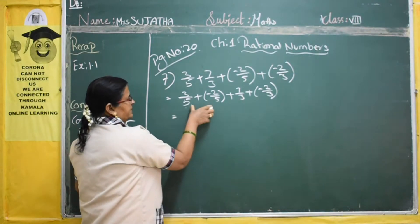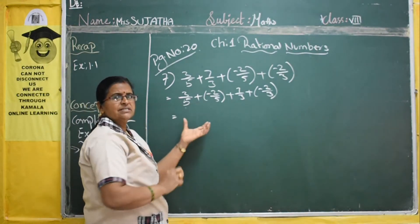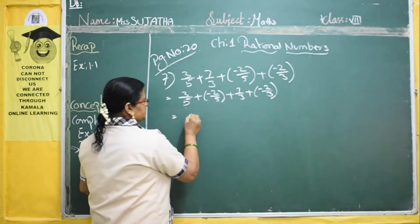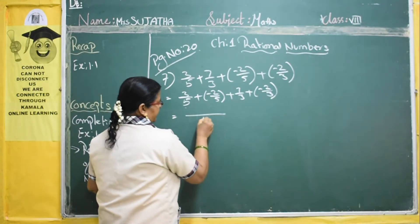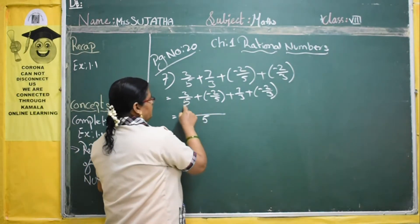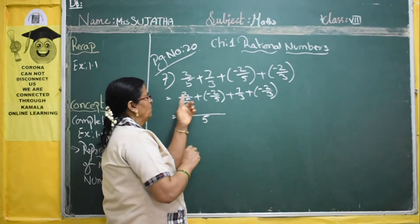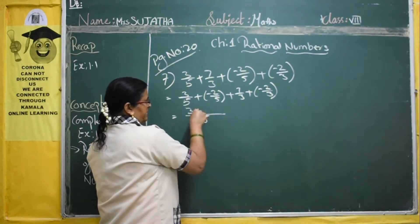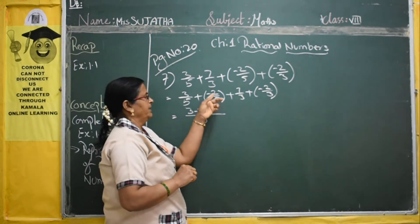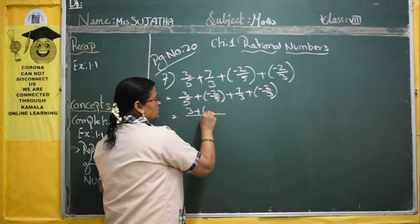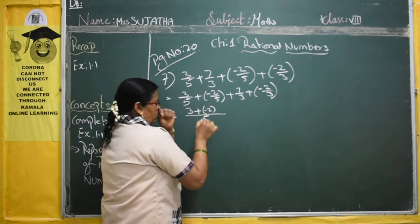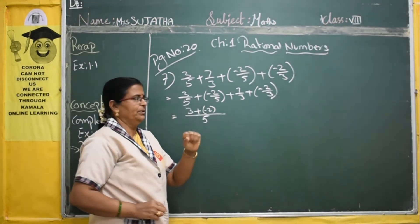For these two fractions, the denominator is 5. So take 5 as the LCM. 5 divided by 5 is 1. 1 into 3 is 3. Plus, 5 divided by 5 is 1. 1 into 2 — but here minus is there, so you have to write minus 2.